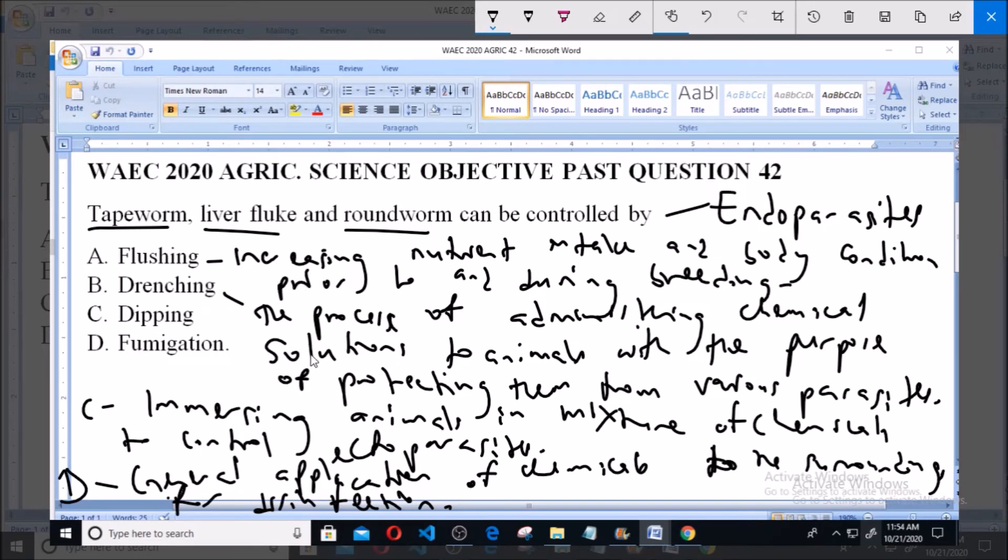Now option B, which is drenching, specifically talks about administering chemical solutions to animals to protect them from various parasites. So these chemical solutions are administered via oral administration, via the mouth. And this is done to protect from various parasites, including or specifically endoparasites such as the tapeworm, the liver fluke, and the roundworm.